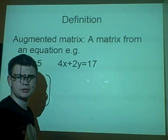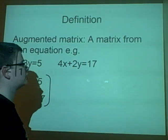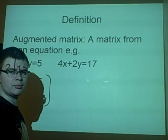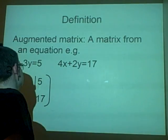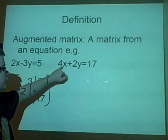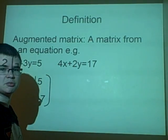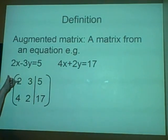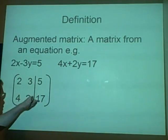First of all the definition. An augmented matrix is a matrix that's been made from an equation such as 2x minus 3y equals 5, 4x plus 2y equals 17. These both go together into an augmented matrix of 2, 3, 4, 2, 5, 17.